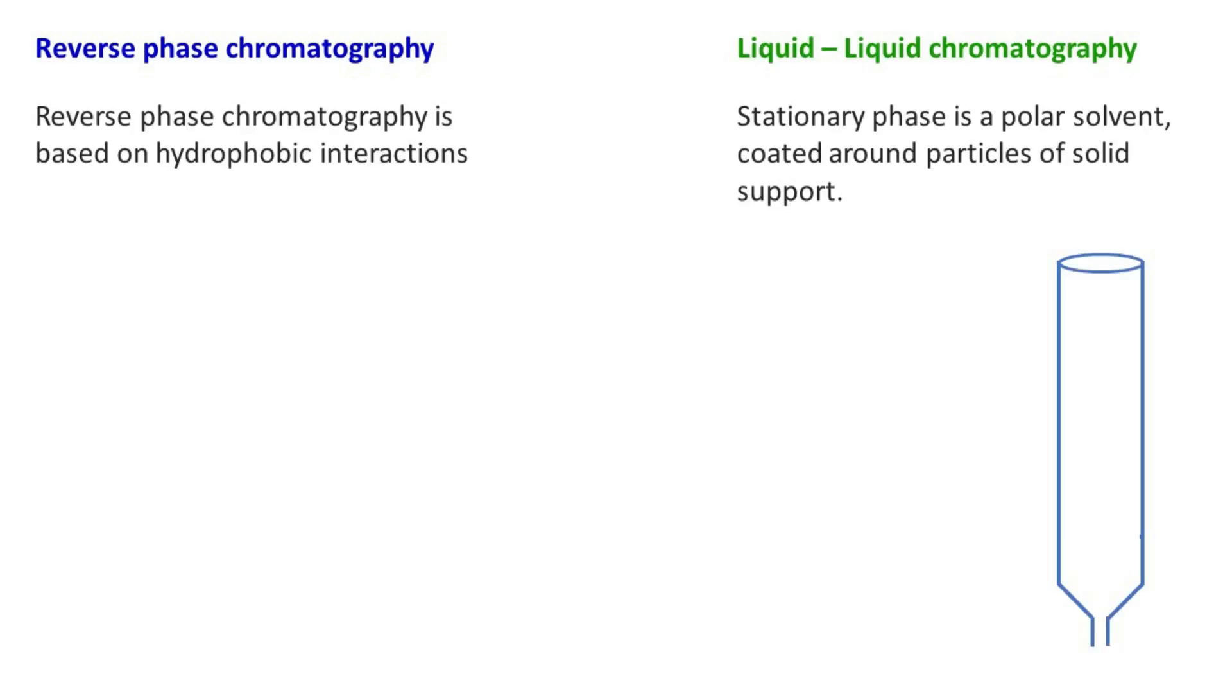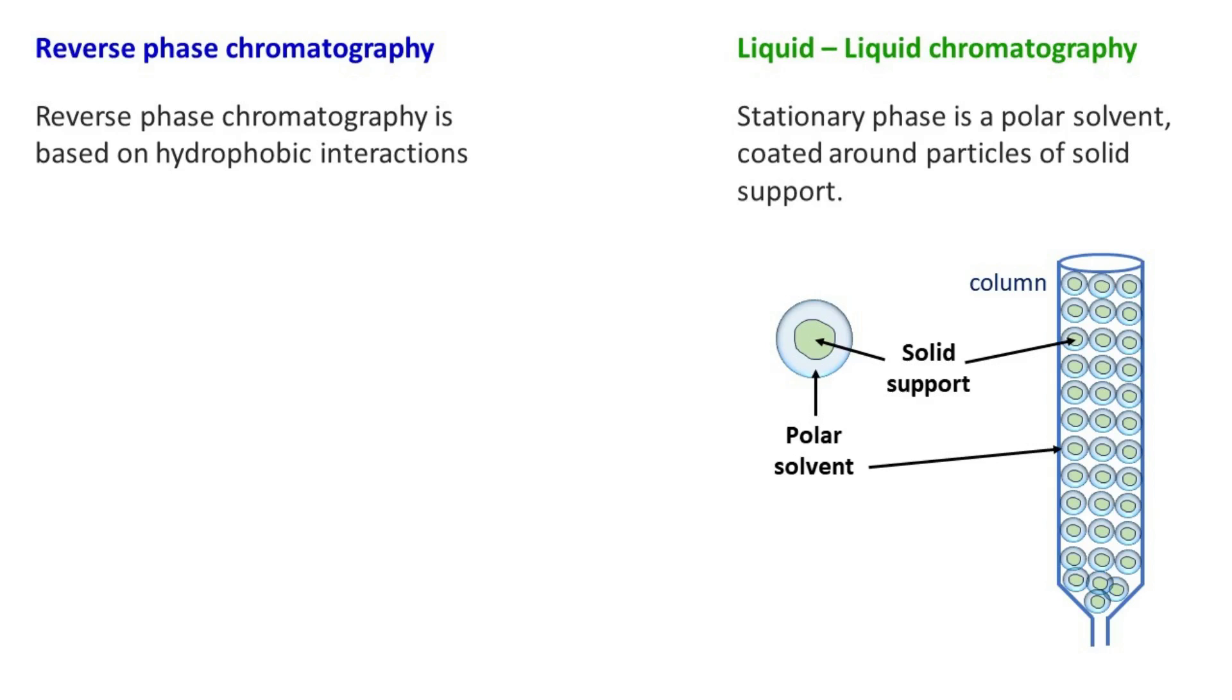In classic liquid-liquid chromatography, the stationary phase is a polar solvent coated around solid support, whereas the mobile phase is a non-polar organic solvent.